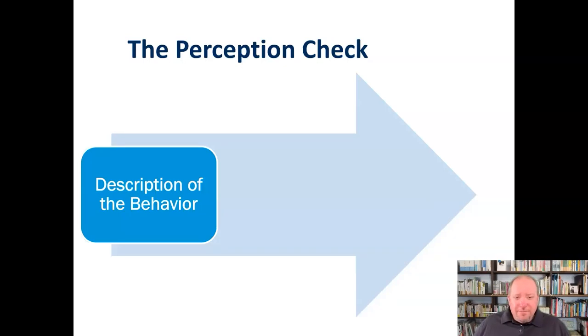The first step in a perception check is just a description of the behavior. You're just describing what it is that's happening, maybe it's happened before and now it's happening again, or what's happening differently. We want to be sure here we're speaking in factual tones, a description of the behavior, not our evaluation of what that means or whether it's good or bad, but just matter-of-factly stating what is happening in that situation.